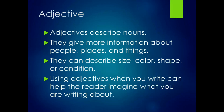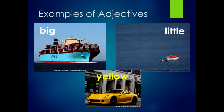Adjective. Adjectives describe nouns. They give more information about people, places, and things. They can describe size, color, shape, or condition. Using adjectives when you write can help the reader imagine what you are writing about. Examples of adjectives: big, little, and yellow.